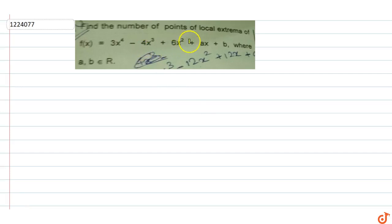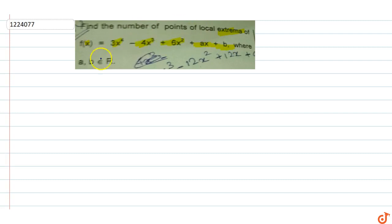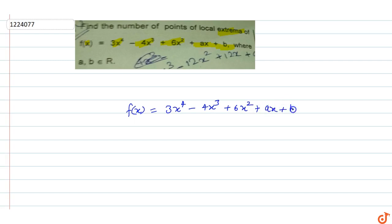In this question, find the number of points of local extremum of f(x) = 3x⁴ - 4x³ + 6x² + ax + b, where a and b belong to real numbers. So the function f(x) is 3x⁴ - 4x³ + 6x² + ax + b. We need to find the number of points of extremum.